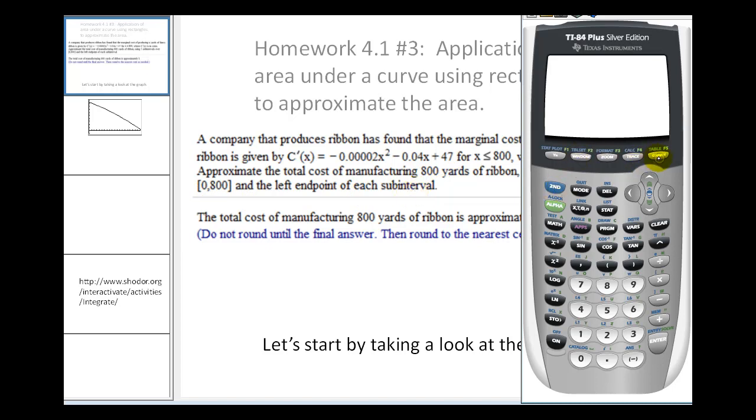Again, if we use our table and we press in x equals zero and x equals 800, this will tell us that we have to go at least as high as 47 and as low as 2.2, but since we want to see the x-axis, we should set the y minimum to some negative value.